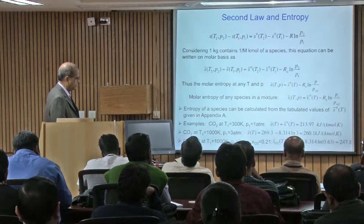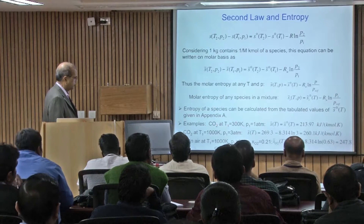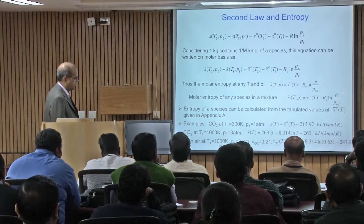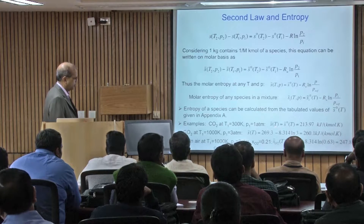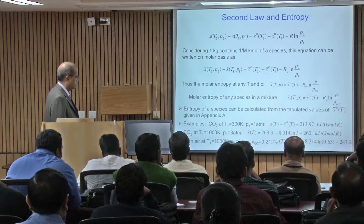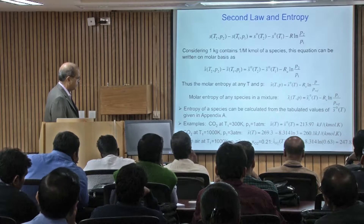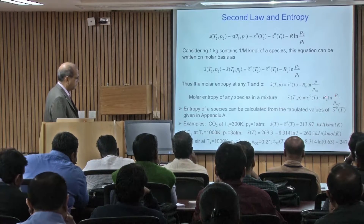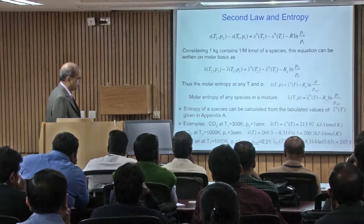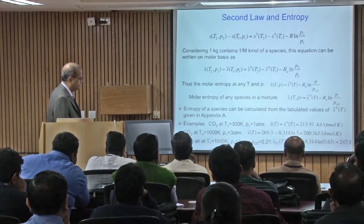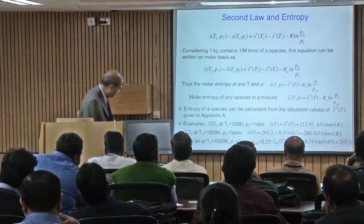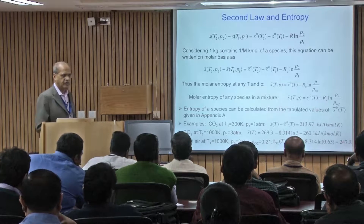There are three different examples here. For CO2 at 300 K, if the pressure is one atmosphere, the pressure correction term is 0 and you look up S⁰ at that temperature from the table. If you have a different temperature, you use the table for that temperature. If you also have a different pressure — say 3 atmospheres — then this 269.3 is from the table and you add the pressure correction term R·ln(3/1). Similarly you can calculate for any other species.